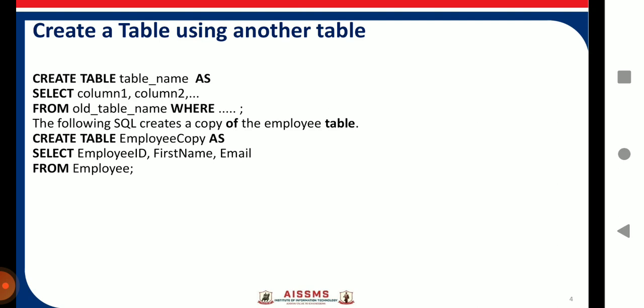Suppose you want to create a table using another existing table. Here is the syntax: CREATE TABLE table_name AS — the keyword AS is very important — then SELECT column1, column2 FROM old_table_name, and if you have specific conditions you can put them in a WHERE clause. For example: CREATE TABLE employee_copy AS SELECT employee_id, first_name, email FROM employee.